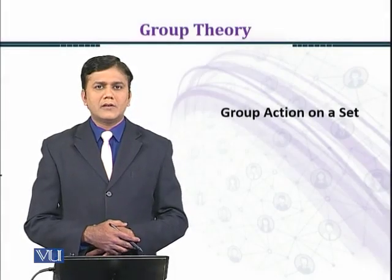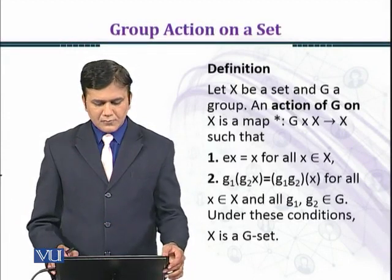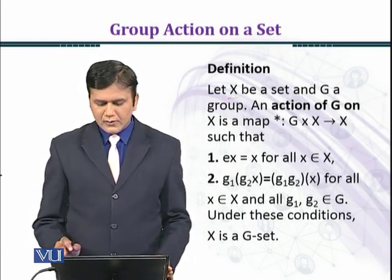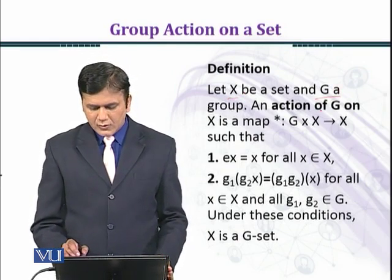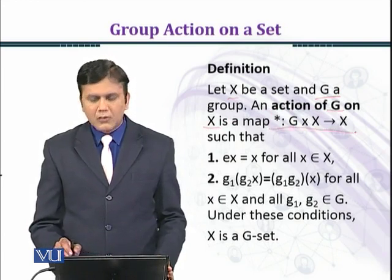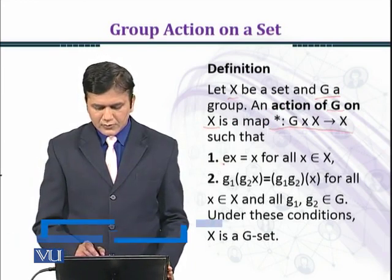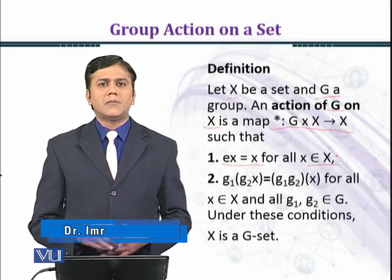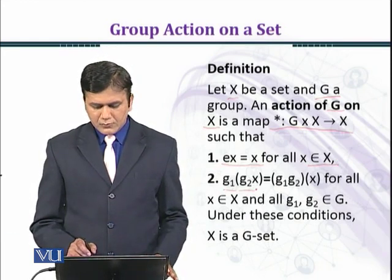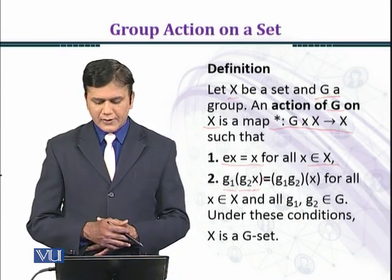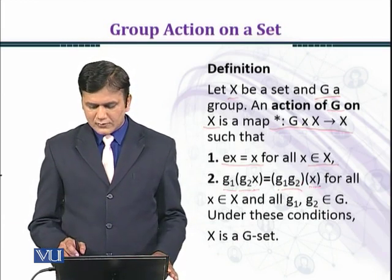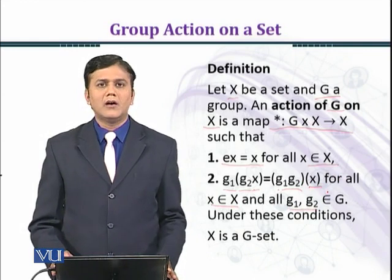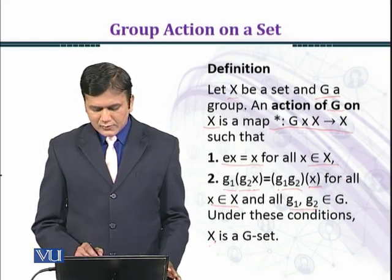In this module we shall discuss some examples on group action. Let's recall the definition: let X be a set and G be a group. An action of G on X is a map star from G cross X to X such that: (1) e★x = x for all x in X, and (2) (g1·g2)★x = g1★(g2★x) for all x in X and all g1, g2 in G. Under these conditions X is a G-set.